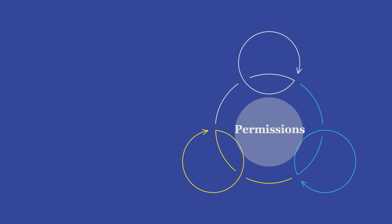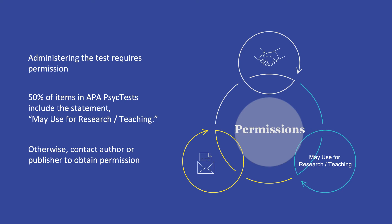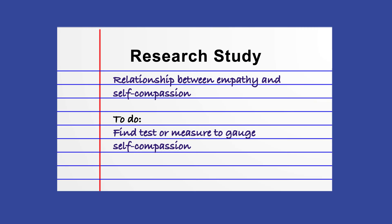Before you run your search, there is one more filter you may want to add. If, as in our practice example, you're planning to administer this test to other people as part of a school project or in a clinical setting, you'll need to make sure that you have permission to do so. About half of the items in APA PsychTest include the permission statement "may use for research/teaching." In other cases, you may have to contact the author or publisher to obtain permission directly from them. In our scenario, we know that we want to use the measure for research, so let's narrow our search to only find results labeled with this kind of permission.